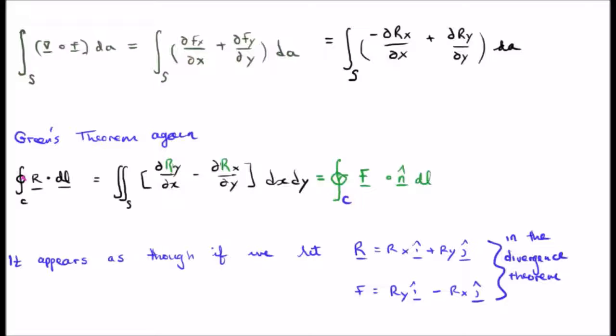We are very nearly there, but it is a very subtle argument that follows. So note the expression at the top of your screen. This is what happens when we plug the vector field F, which came from Green's theorem, into the two-dimensional divergence theorem.